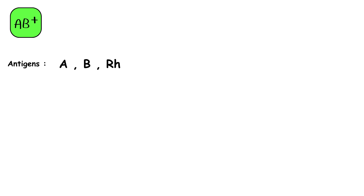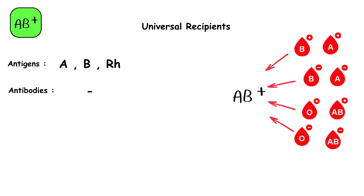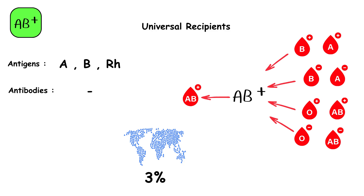AB positive blood type has A, B, and RH antigens on the red blood cells and no anti-A or anti-B antibodies in the plasma, making these individuals universal recipients. They can receive blood from any ABO and RH type, which is highly advantageous in emergencies. However, they can only donate to other AB positive recipients due to the presence of all major antigens. About 3% of the global population has AB positive blood.